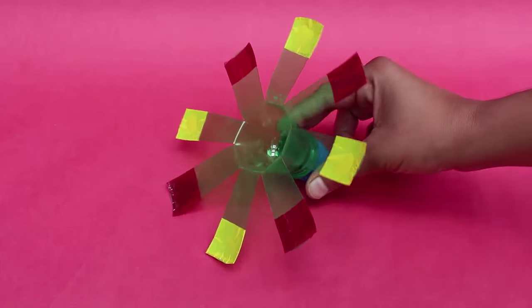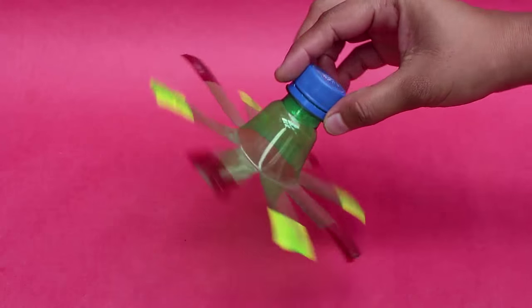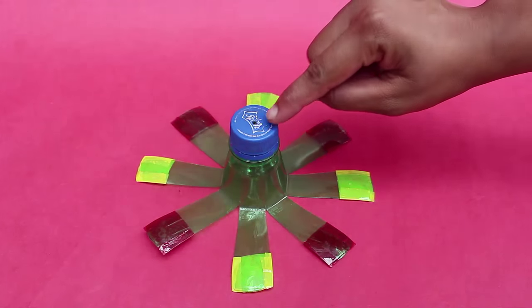Cut a 2 liter plastic bottle in half. Cut 6 to 7 petals and flatten them to make fan blades.